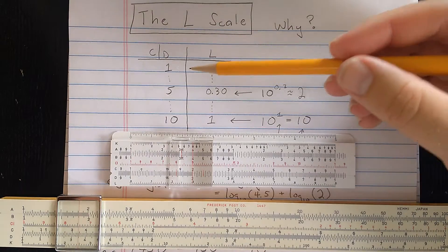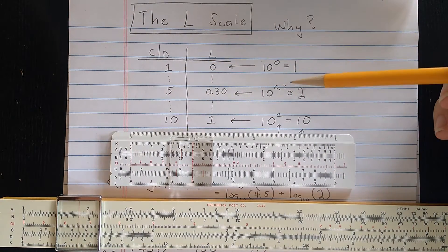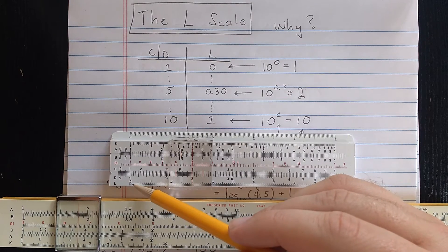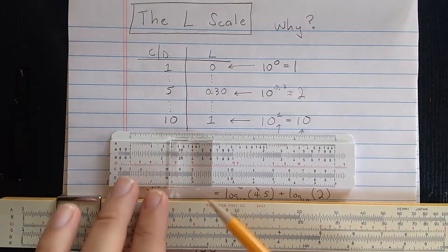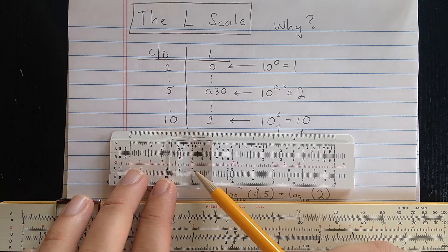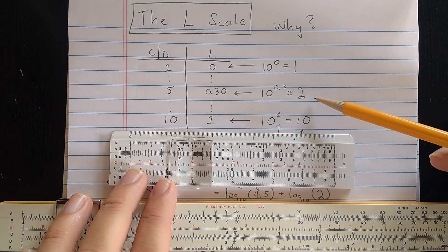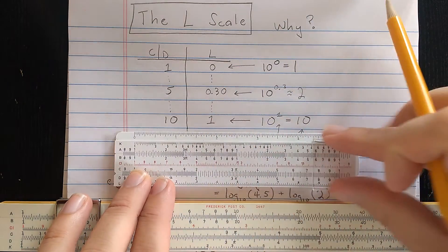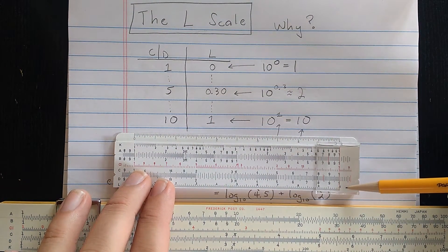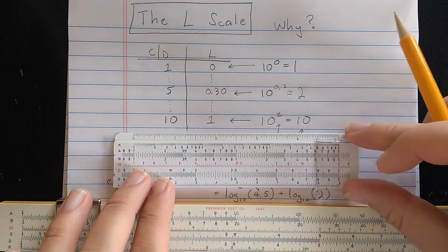But think of it this way, C and D go from 1 to 10, so 10 to the 0 is 1, so here is 0 on this end of the L scale. 10 to about the 0.3 is 2, somewhere in the middle of the scale. And then at the end of the scale, 10 to the 1, or here, 1.0 is 10.